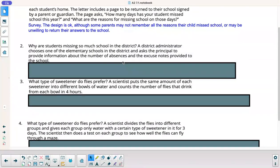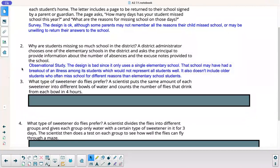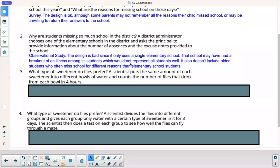All right. Number two, why are students missing so much school in the district? A district administrator chooses one of the elementary schools in the district and asks the principal to provide information about the number of absences and excuse notes provided to the school. All right. That's obviously an observational study because the principal is observing and he's not trying to influence anybody. This design is bad because it only uses one single elementary school. If you're looking at the whole district, you don't want to narrowly restrict your study to one elementary school. That school could have had a breakout of an illness among students, which might not represent all students well in the district. Also, it doesn't include older students who often miss school for different reasons than elementary school students. The older students have different reasons than the younger students. So this is a bad study. It's not a good representation of what you're trying to find.